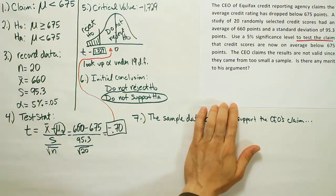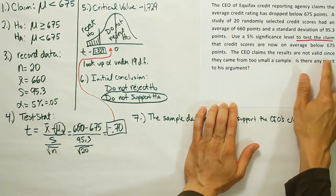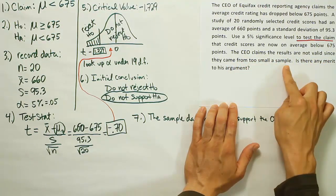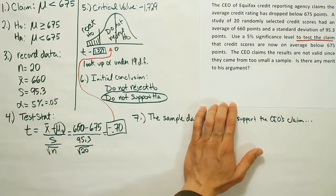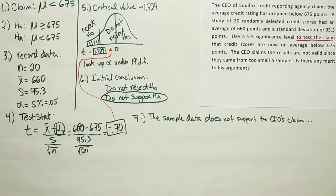So there's an important thing at the end here. It says, the CEO claims the results are not valid since they came from too small a sample. Is there any merit to his argument? Well, in fact, actually, in this case, I would say there is some merit to his argument. Normally, that's not true. Normally, a small sample size is perfectly valid as long as we're able to reject H0. But whenever we're not able to reject H0, whenever we fail to reject H0, there's always this possibility that a more powerful test would have rejected H0.